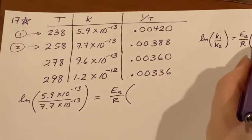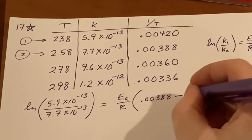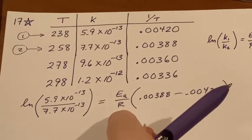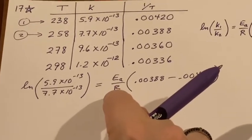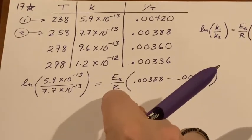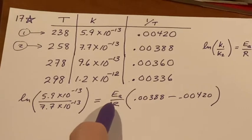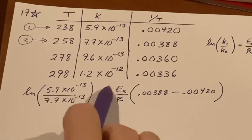And that will be E sub a over R, and then I can put in one over T2, 0.00388, minus 0.00420. I haven't put anything in yet for R. Which R am I using? Because we know R is this gas constant, but there's more than one that we might use.